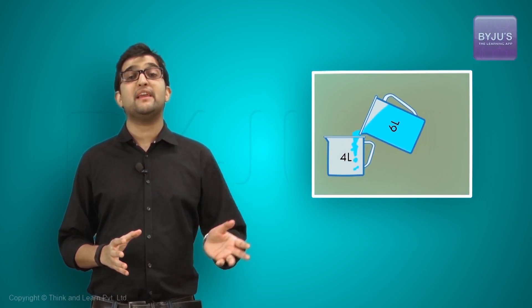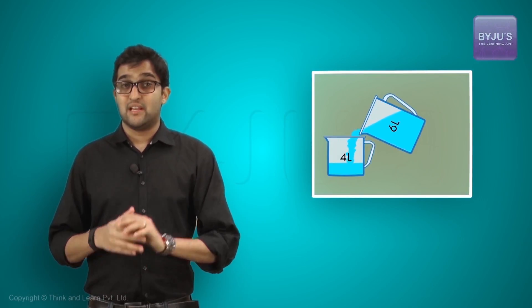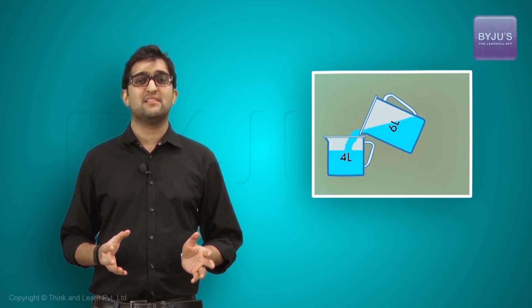By filling 6 liters first, then emptying this into 4 liters jug. The left out volume in 6 liters is now 2 liters.